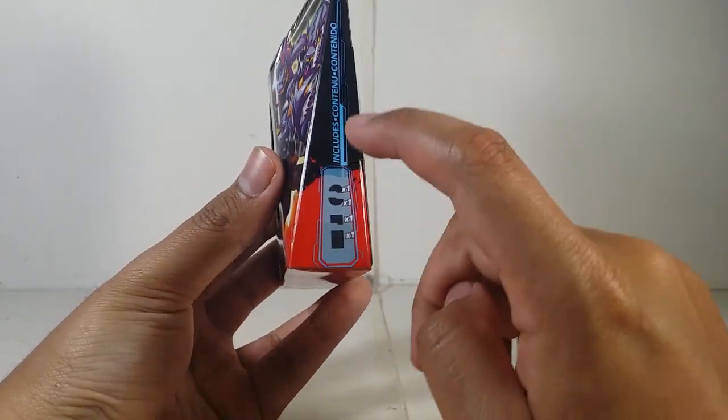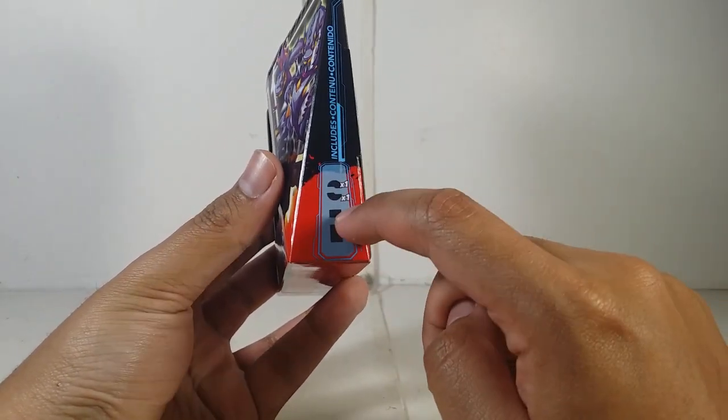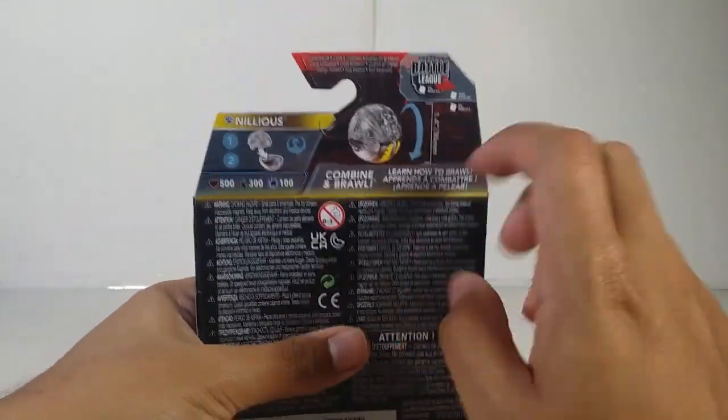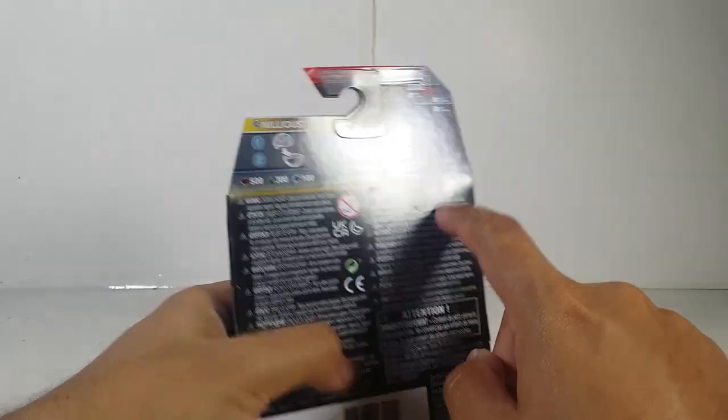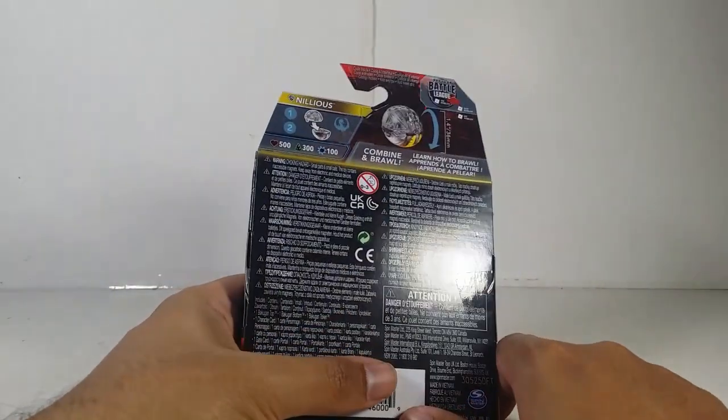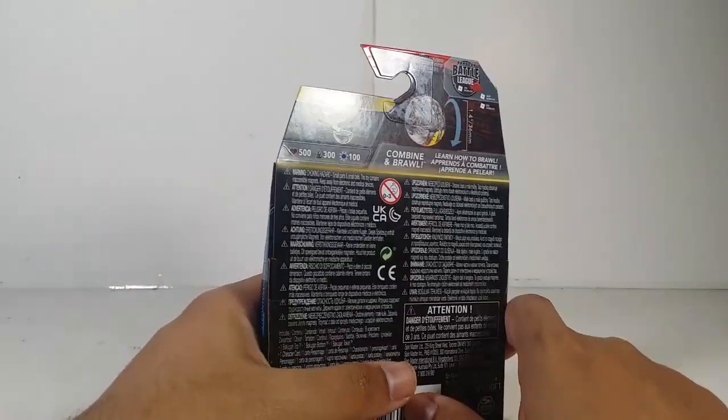The side of the package shows it comes with the top, bottom, character card and gate card. The back shows the stat set and the Bakugan Battle League, which I don't want to play Roblox because I hate Roblox and I'm never going to play it.